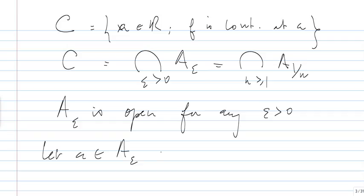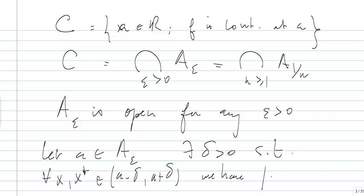We know that there exists delta such that for every x, x star in (A - delta, A + delta), we have |f(x) - f(x*)| < epsilon. So let me do it on the real line to express. So you have A here, A - delta, and A + delta.